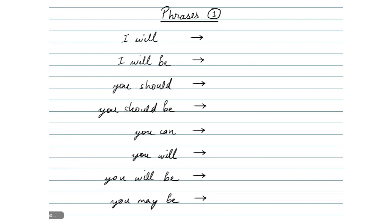Next we have 'I will', so here we use this. Next we have 'I will be', so here we use this. Next we have 'you should', so here we use this. Next we have 'you should be', so here we use this. Next we have 'you can', so here we use this. Next we have 'you will', so here we use this. Next we have 'you will be', so here we use this. Next we have 'you may be', so here we use this.